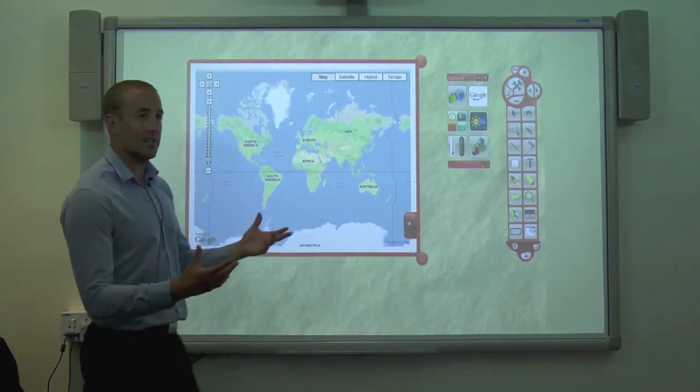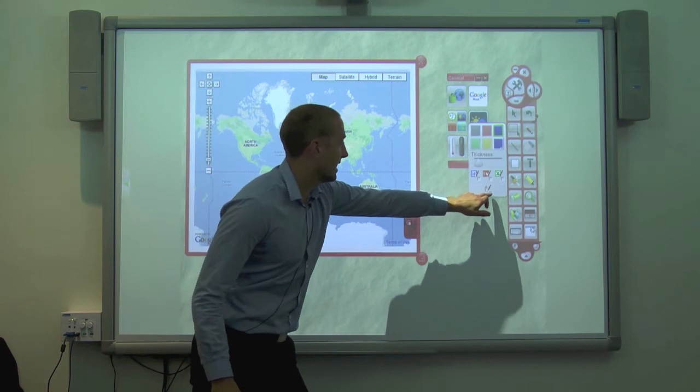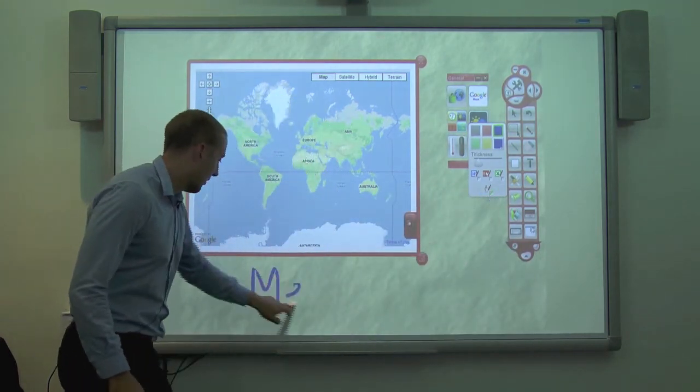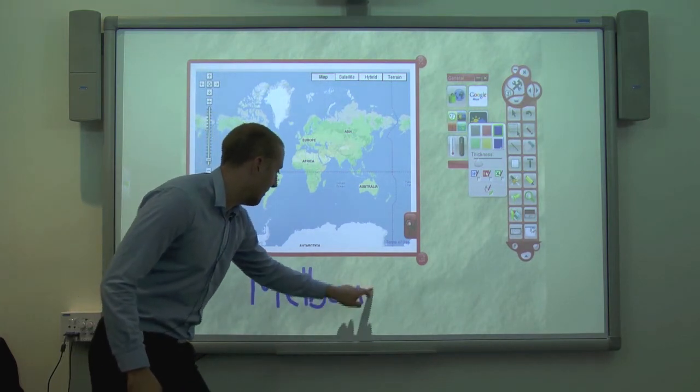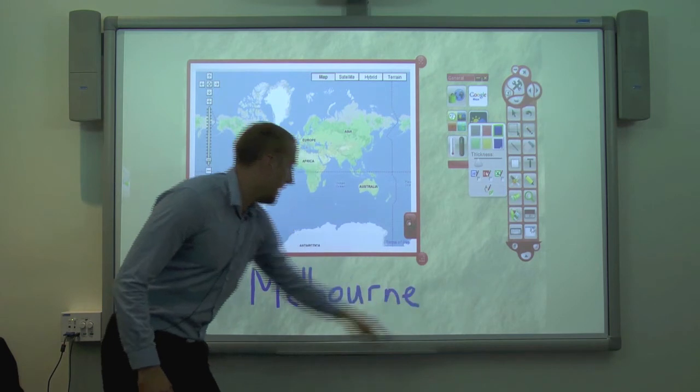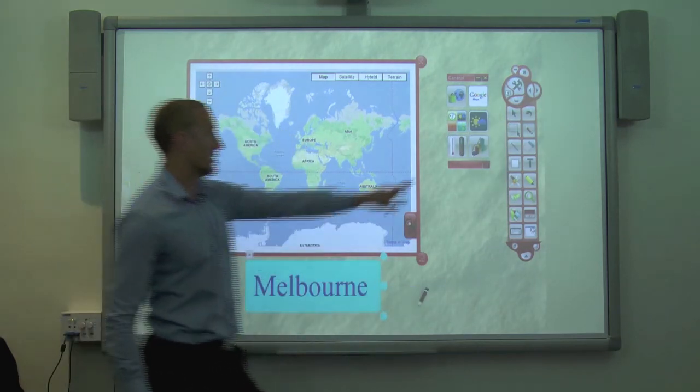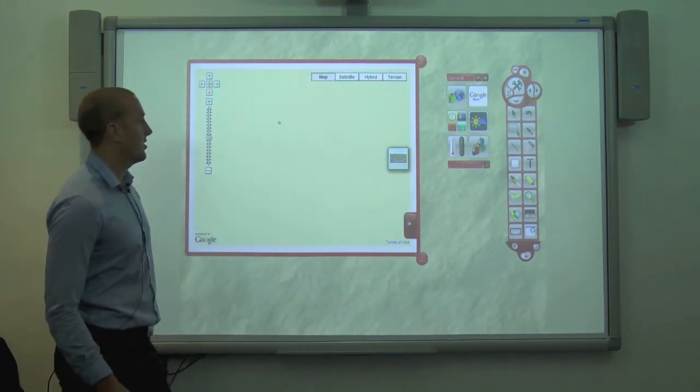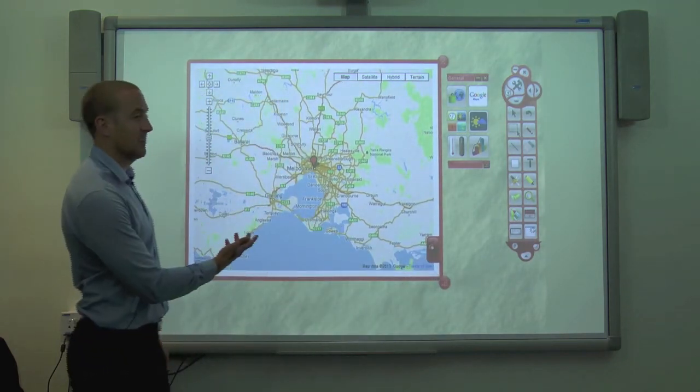You can then do things like grab the pen, we'll turn the pen into a text recognition, just by clicking that button there. We'll very quickly scribble up a city that we're interested in investigating a little further, and by using the text recognition tool, that piece of ink will turn into a piece of text for us. Great way of testing students' handwriting. We can take that text box, drop it into the map, and the map will be clever enough to find where Melbourne is.